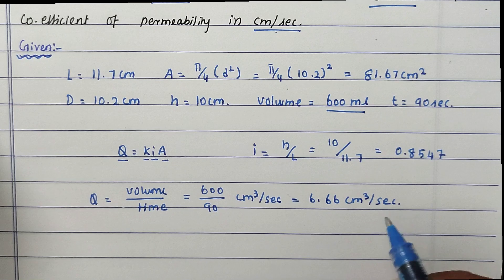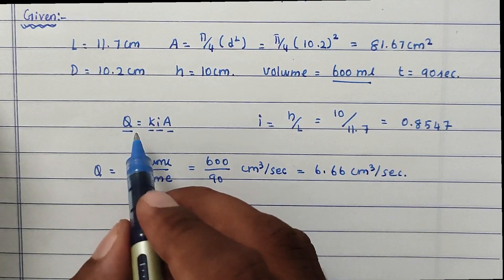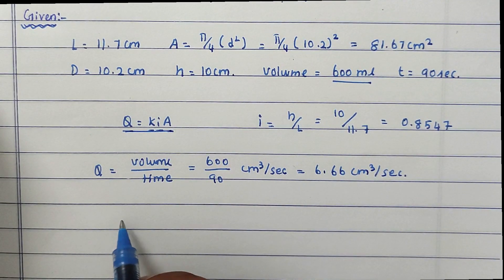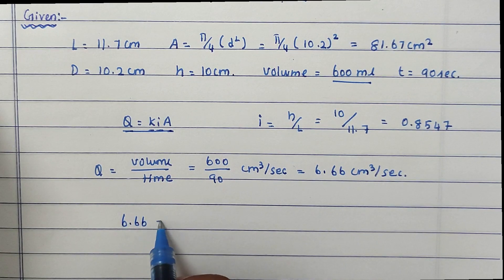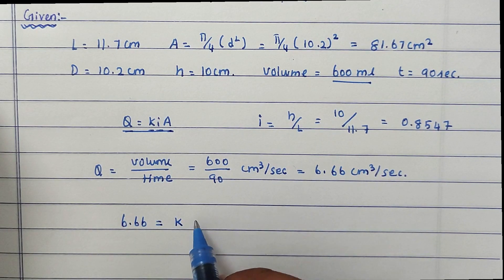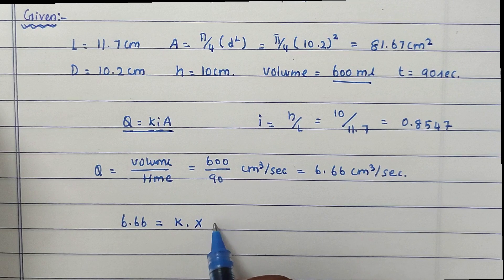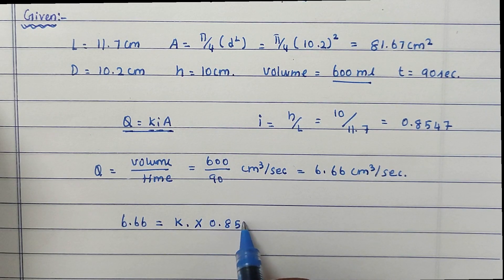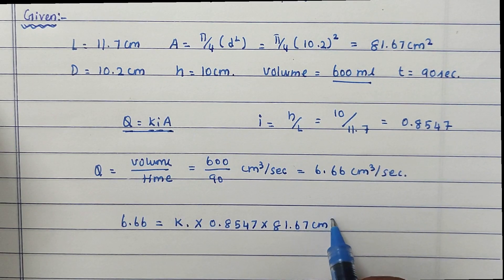After that we can substitute all the values in the formula. 6.66 = k × 0.8547 × 81.67 cm².